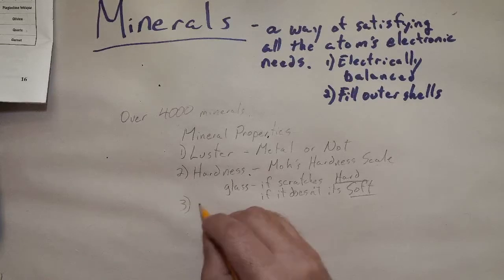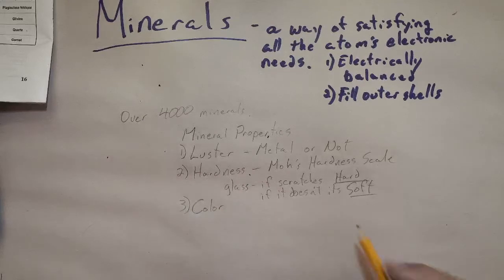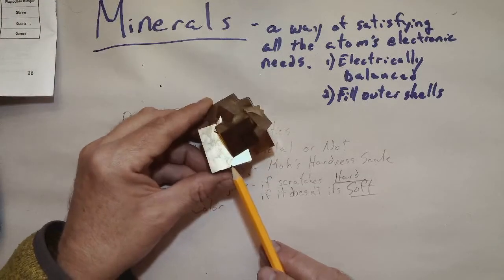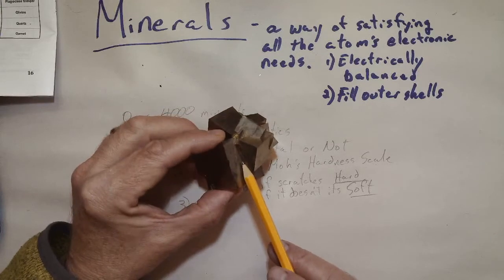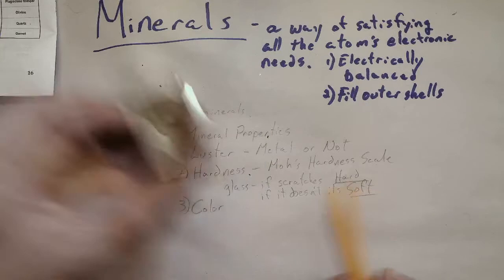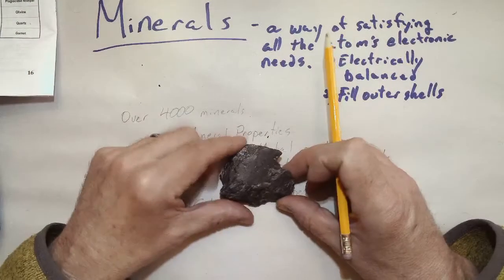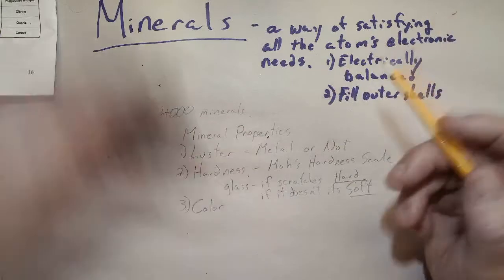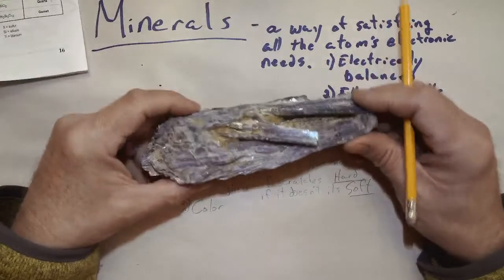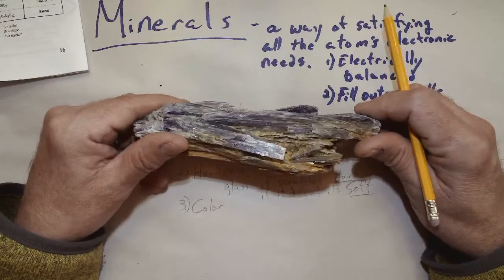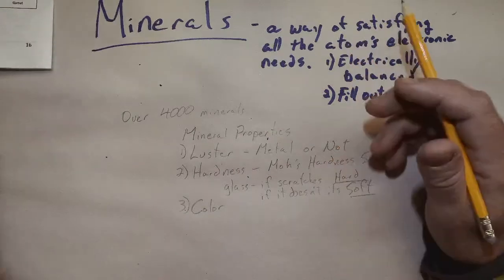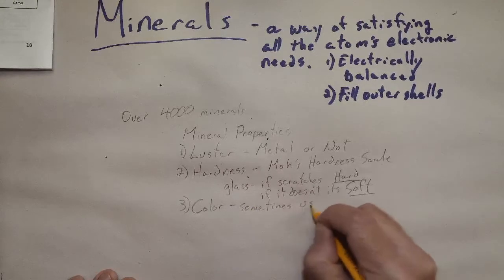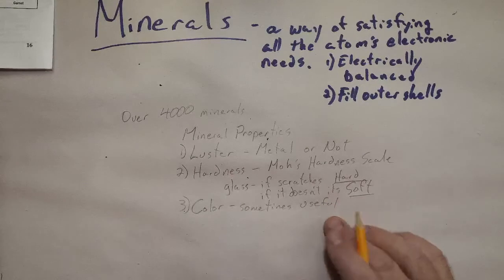Another property which we only use occasionally is color. Now when you're first starting out, you might be tempted to say this mineral is that color or this mineral is the other color. Pyrite is a wonderful example of a mineral whose color is really pretty much always the same. Any pyrite you see is going to have that brassy yellow color. But many of the other minerals, for example, feldspar, feldspar comes in a range of colors from white to black. So color is not really useful with that. Kyanite generally comes in colors similar to this, but it doesn't have to. So color is sometimes useful.